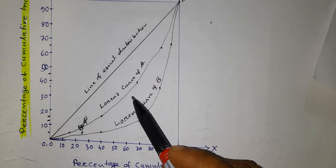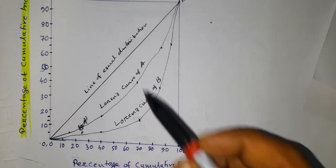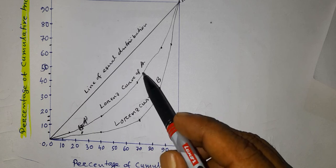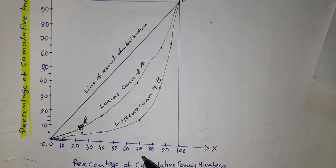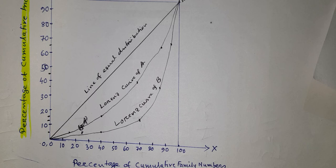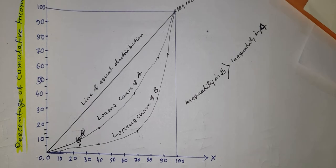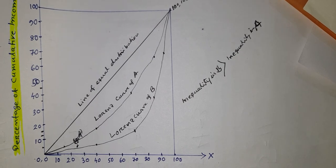Comparing the two Lorentz curves A and B, the location of curve A is nearest to the line of equal distribution. So the inequality in village A is less than the inequality of income distribution in village B, or the inequality in village B is more than in village A. Thus, inequality in B is greater than the inequality in A. This is how, using the Lorentz curve, we can measure the variation or dispersion in the distribution of any variable. Thank you.